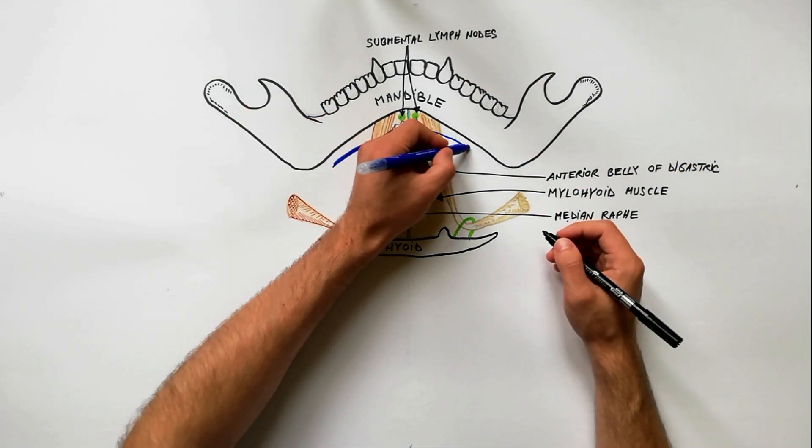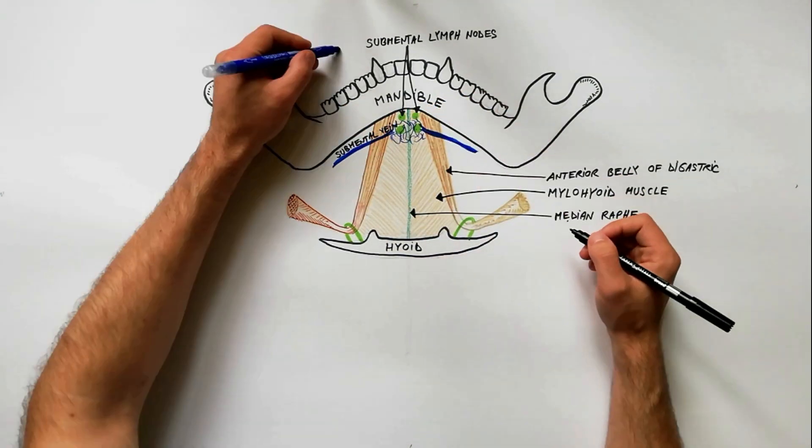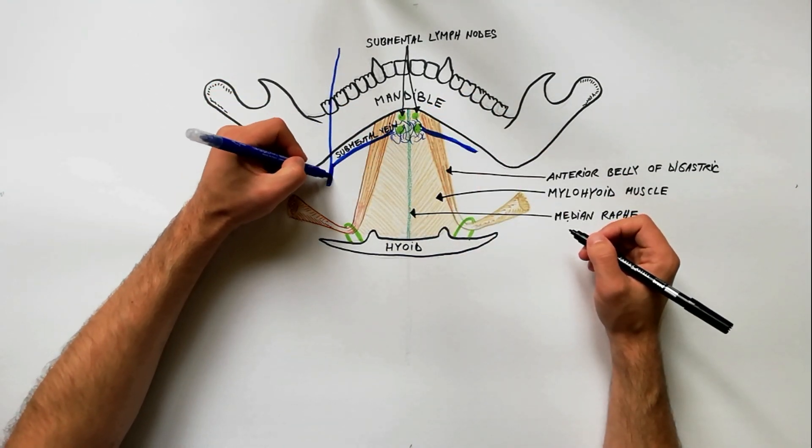The submental veins which arise from a venous network. These veins drain laterally into the facial vein.